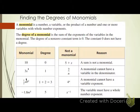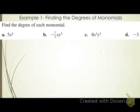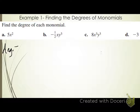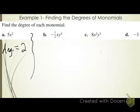Let's move on to Example 1a — find the degree of each monomial. Letter A: 5x squared. The degree is 2 because we add up all the exponents, and I only have one exponent, so I use it as the degree.